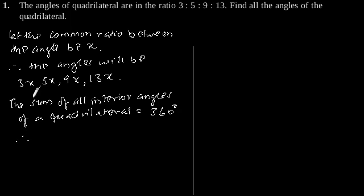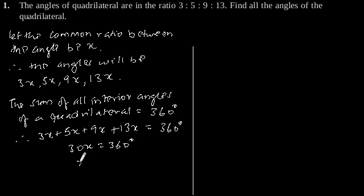Therefore, 3x + 5x + 9x + 13x = 360°. This equals 30x, which gives the value of x = 360 ÷ 30 = 12 degrees.